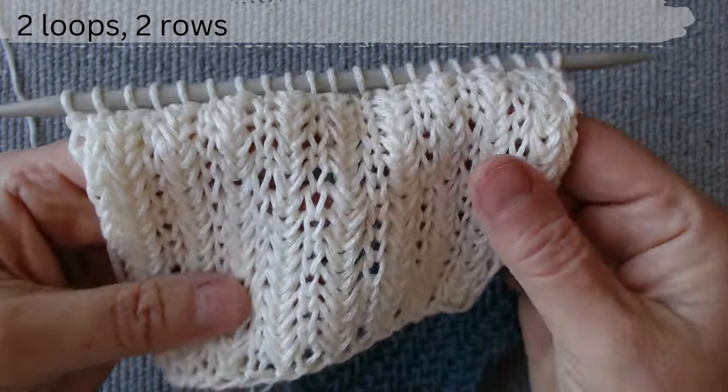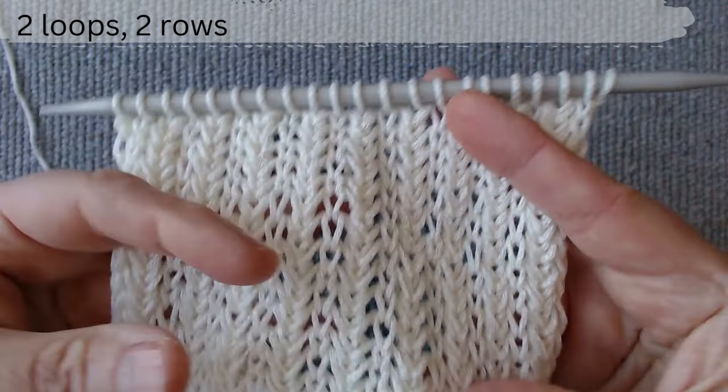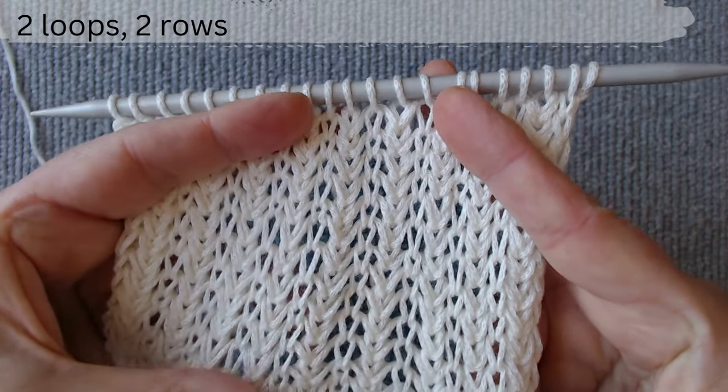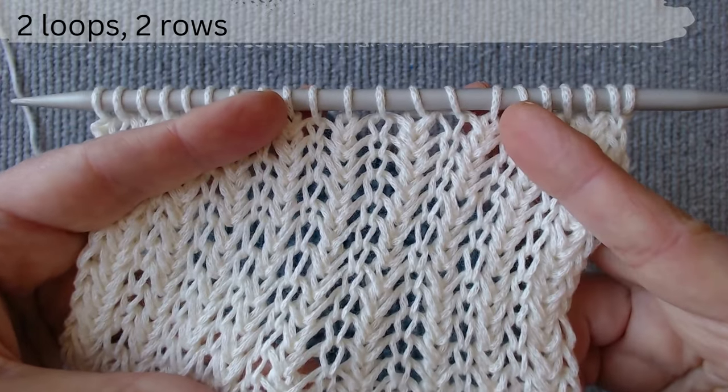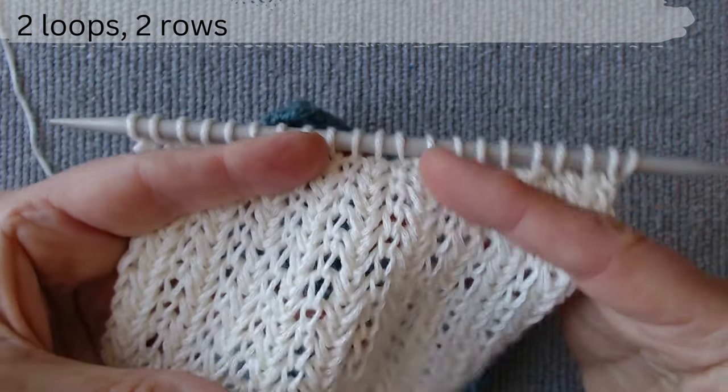The scheme consists of two loops and two rows. Knit loosely with a thicker than normal hook. We begin from the wrong side.